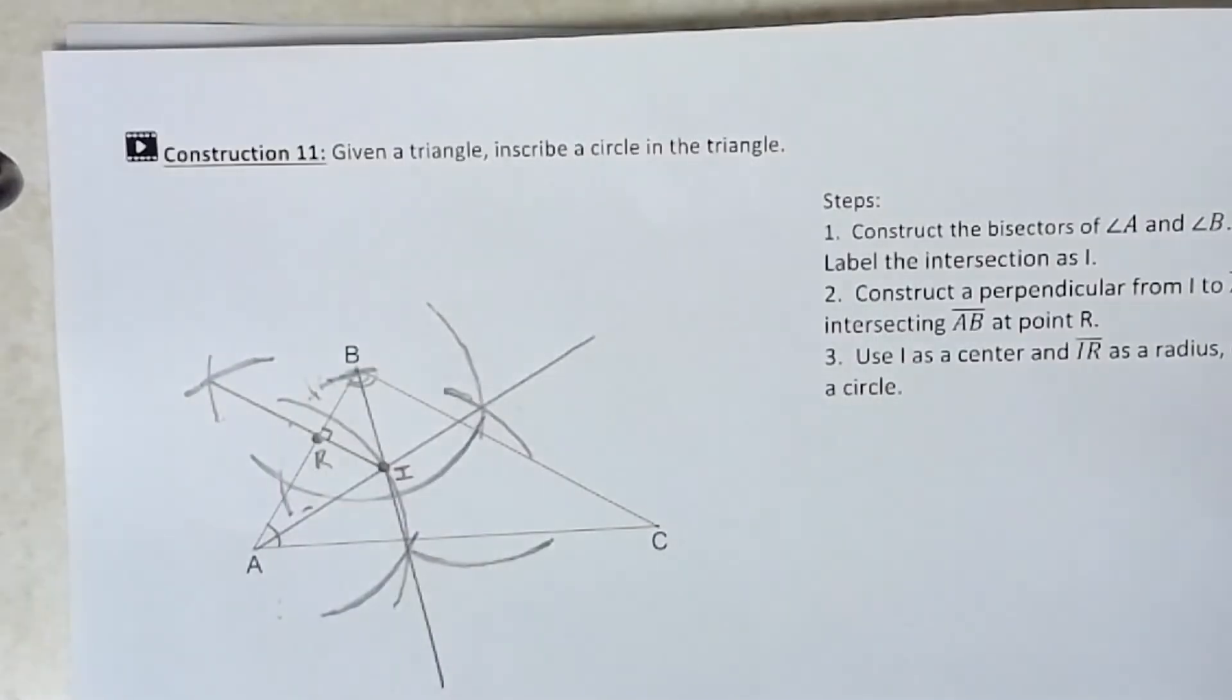Now, once I have that, I have the radius of my inscribed circle, so I can go ahead and use my compass to copy that and ultimately draw the inscribed circle.